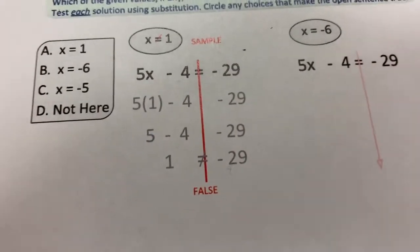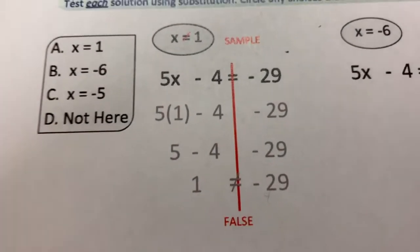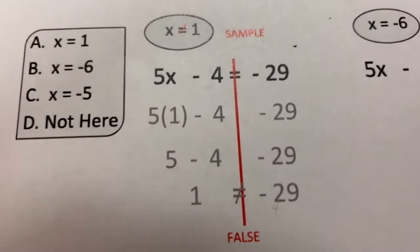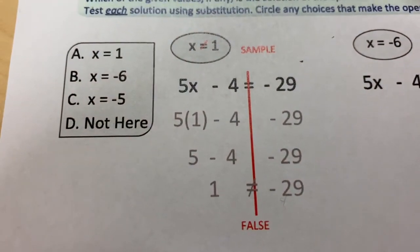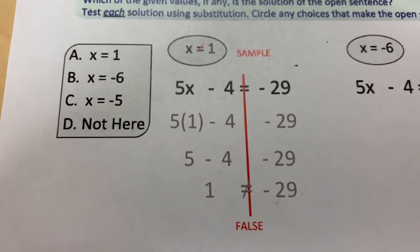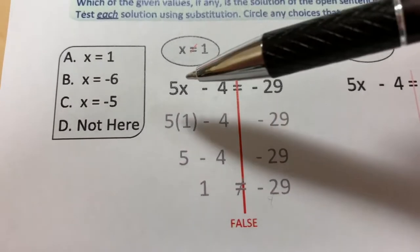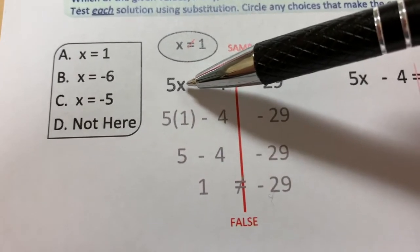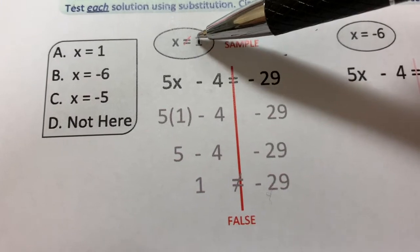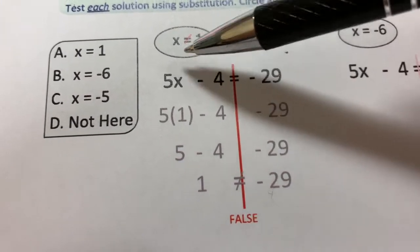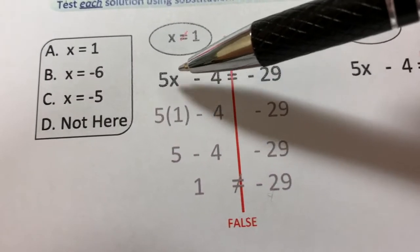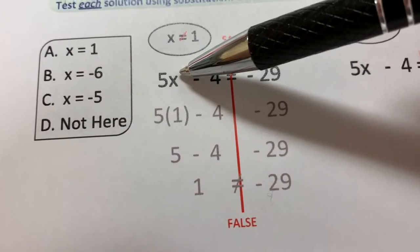Let's do the same thing with numbers. Now, the first sample is given to you. You have an equation: 5X minus 4 equals negative 29. That's an open sentence. It has a variable in it. It has an X. So, depending on what variable we put in, a number to replace the variable with, whatever we put in there is going to make this either true or false.